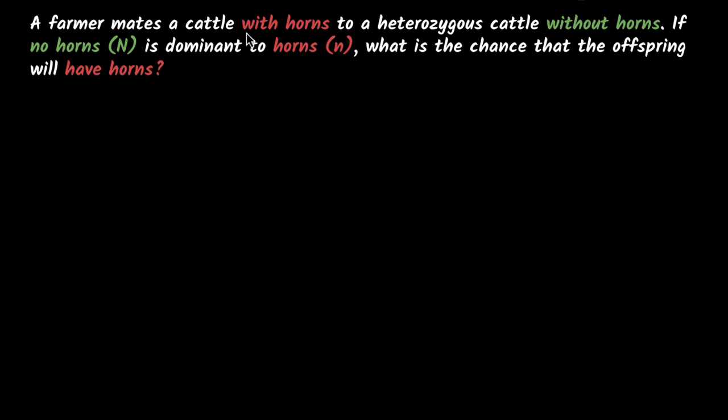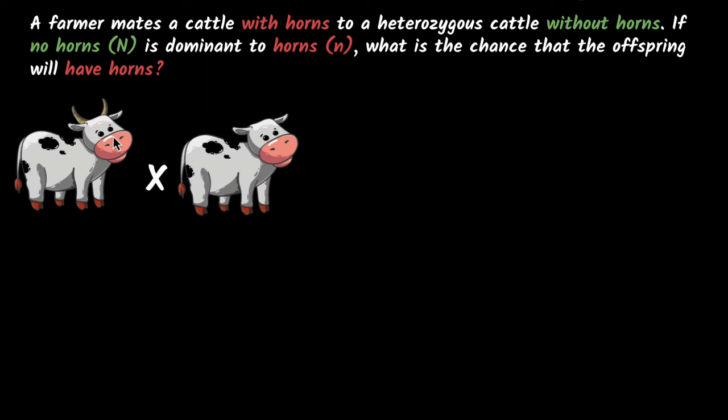A farmer mates a cattle with horns to a heterozygous cattle without horns. Let's quickly draw that. Now if no horns (N) is dominant to horns (n), that means the allele responsible for no horns is dominant to the allele responsible for giving horns. What is the chance that the offspring has horns? We need to figure out what is the chance that the kid will have horns. How do we do this?